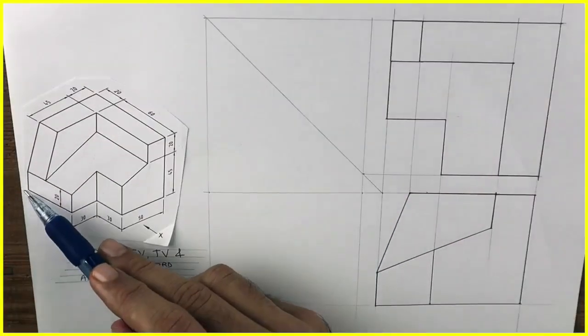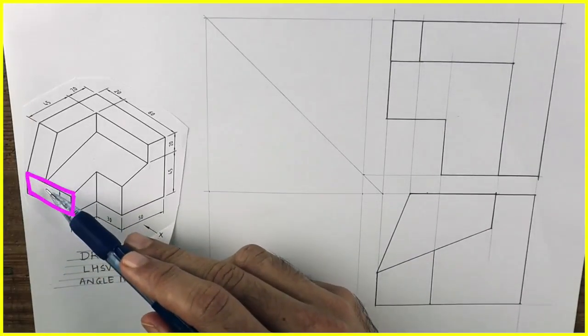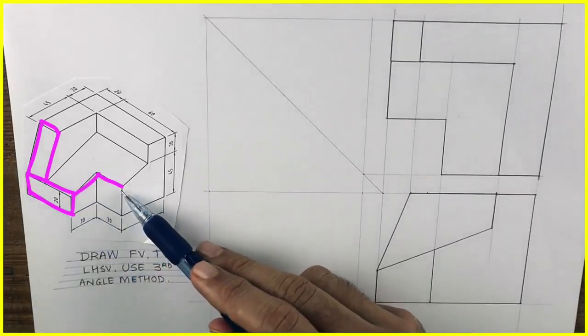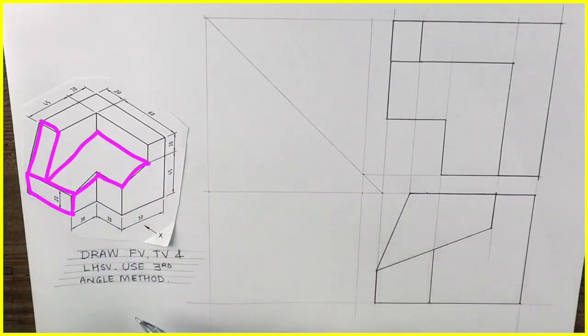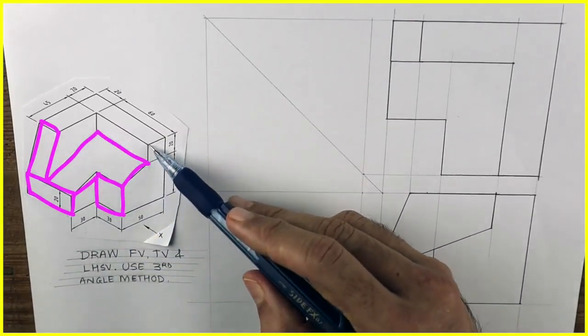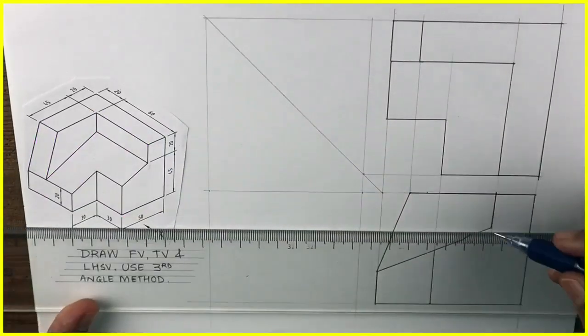After that we'll see side view. We'll see this rectangle, then another rectangle, this L shape, this small rectangle, and this rectangle. So we'll start with this rectangle.